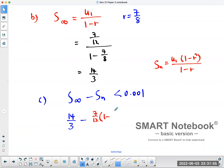1 minus (7/8) to the power of n, all divided by 1 minus 7 over 8. So that's the sum of n terms. And this must be less than 0.001.